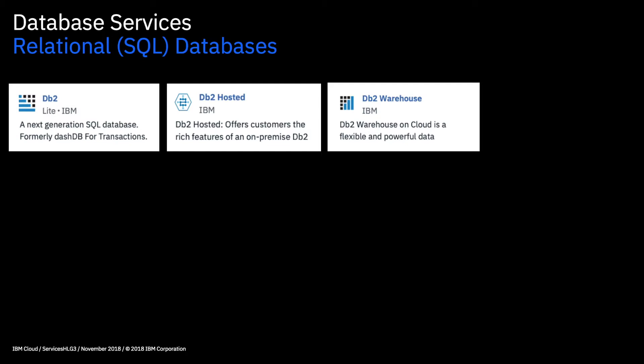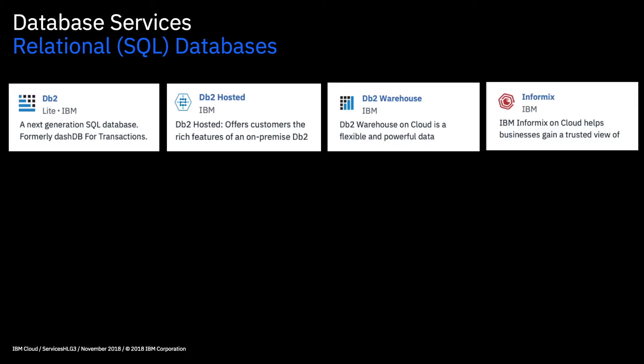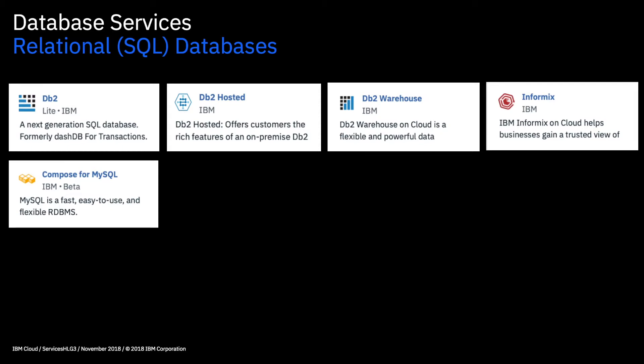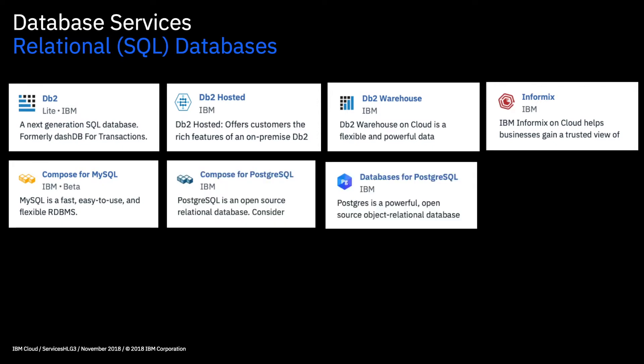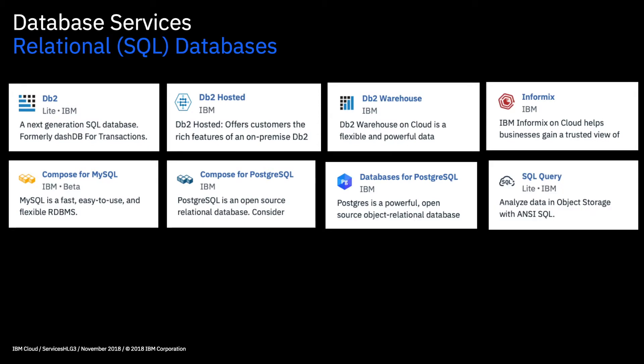Next we have DB2 Warehouse, and as I mentioned when it popped up in the analytics part of the catalogue, this is an instance of DB2 specifically for data warehousing. We then have InfoMix, which brings a few features of NoSQL databases as well — you can do analytics rather than more traditional OLTP transactional work on there. We have Compose for MySQL, which is basically a MySQL database in the cloud. And there are two PostgreSQL offerings: Compose and Databases for PostgreSQL. Databases for PostgreSQL is actually a newer offering and offers better scaling and automated management. Lastly here we have the SQL Query service, which enables you to run SQL queries against certain file types stored in object storage without actually creating a database.